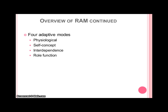The self-concept mode includes psychological and spiritual components, including the physical and personal by acknowledging body sensation and body image. Interdependence involves close relationships, and the role function mode refers to the roles of the person and their function and expectations of these roles.